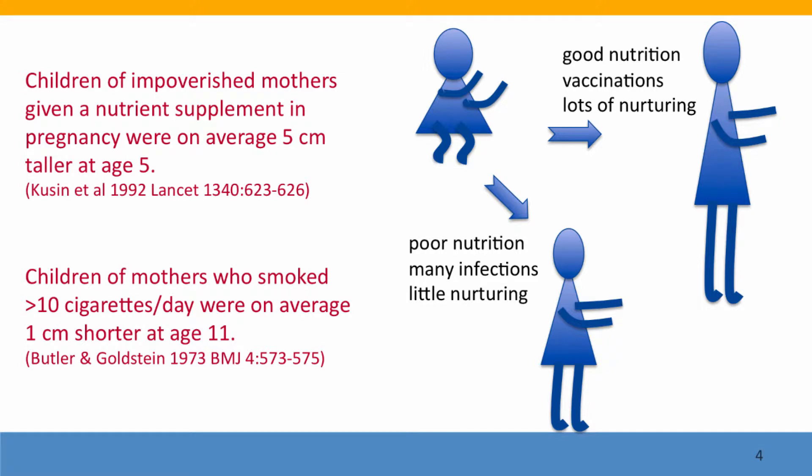Another component of the environment is maternal smoking. If the mother smoked, the children were on average about a centimeter shorter at age 11 than if their mothers didn't smoke. These are clearly environmental effects on a trait that we think of as being primarily genetic.